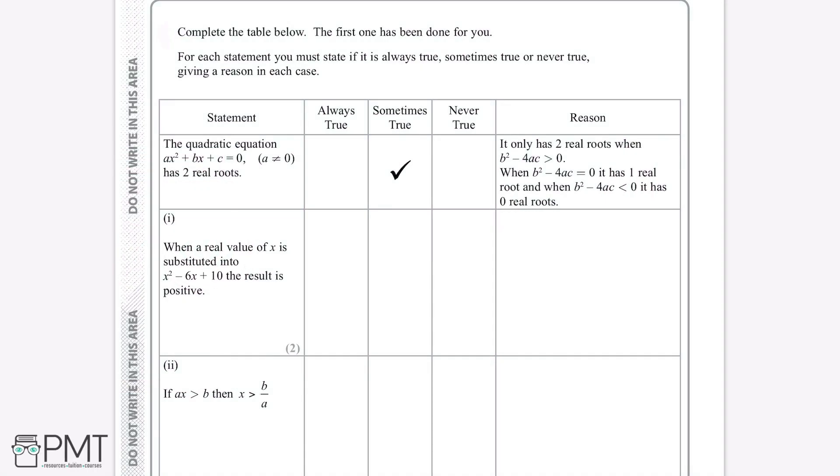Complete the table below. The first one has been done for you. For each statement, you must state if it's always true, sometimes true, or never true, giving a reason in each case.